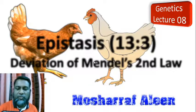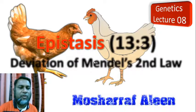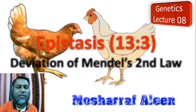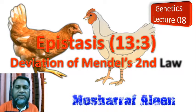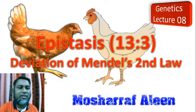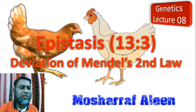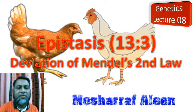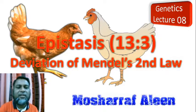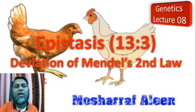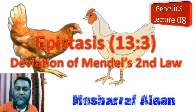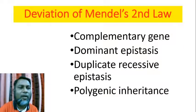Dear viewers, you are most welcome to my online class on genetics. Today I discuss epistasis. Its ratio is 13 to 3. It is the deviation of Mendel's second law. I think this class will be very helpful to us. Deviation of Mendel's second law.